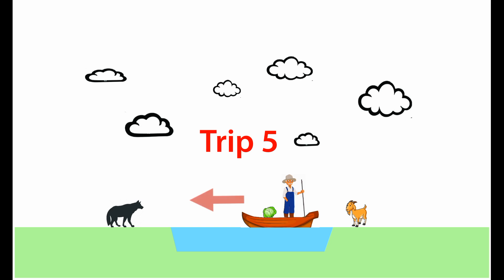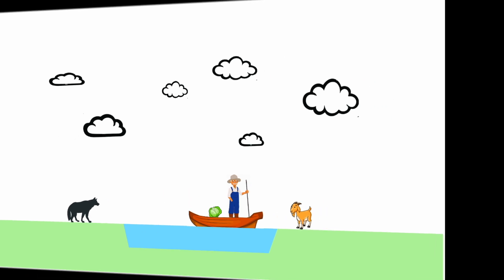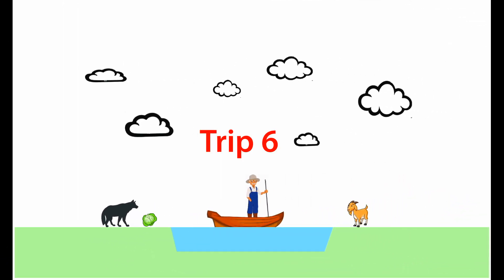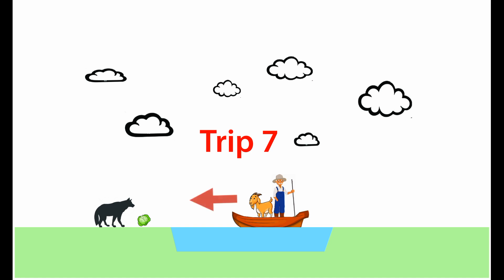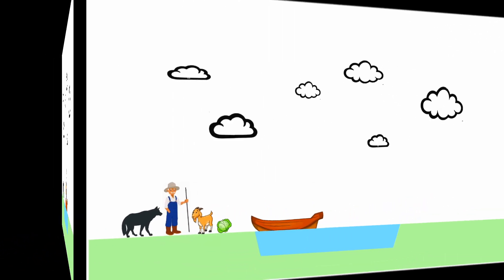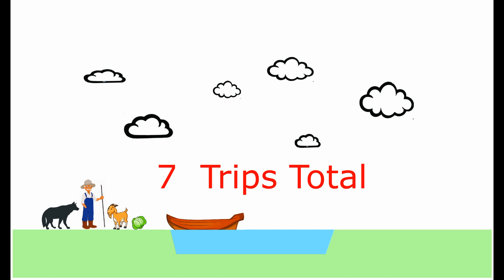Trip five, he takes the cabbage by itself over to the wolf side. Leaves it there and comes back solo to get the goat. Trip seven is the final trip across. Making it successful and everyone is happy.